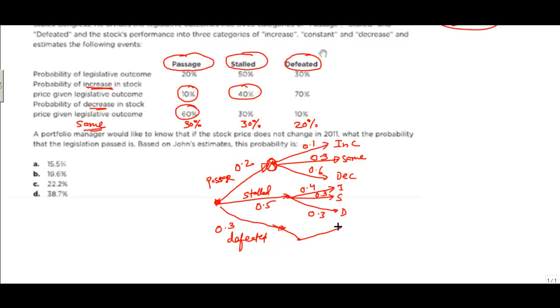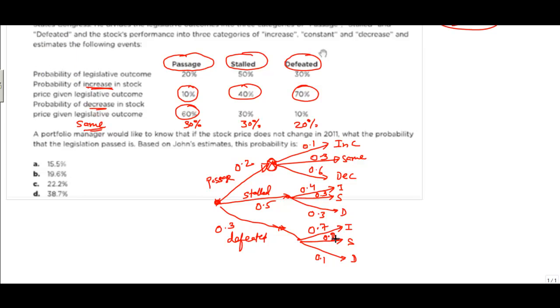For the defeated scenario, increase is 70%, decrease is 10%, and same is 20%. Now the question is: a portfolio manager would like to know — given that the stock price does not change, what is the probability?